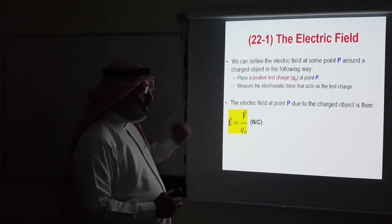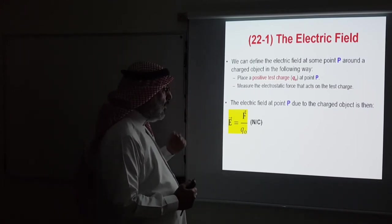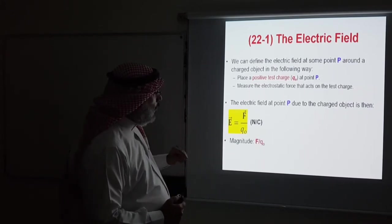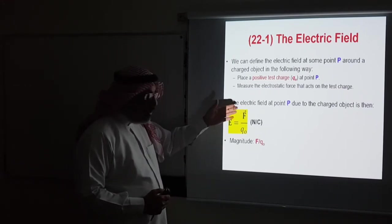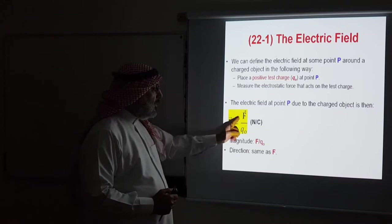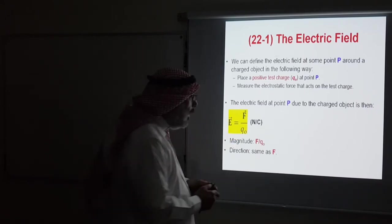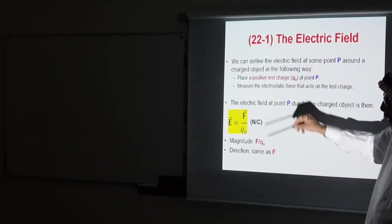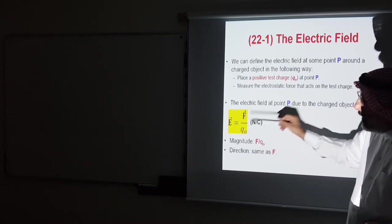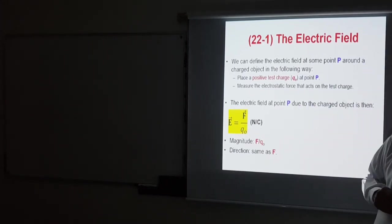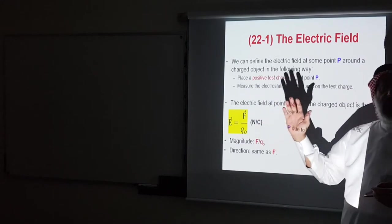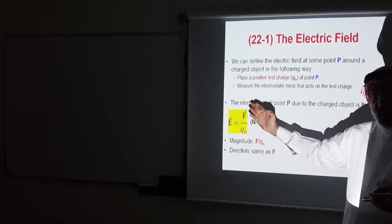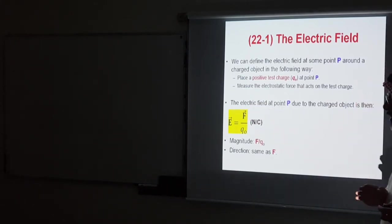The SI unit of the electric field is newton per coulomb. The magnitude of the electric field equals the force measured divided by q0, and its direction is the same as the direction of the force. This is because we chose the test charge to be positive — a vector divided by a positive scalar does not change the direction of the vector — so the electric field has the same direction as the electrostatic force on q0.